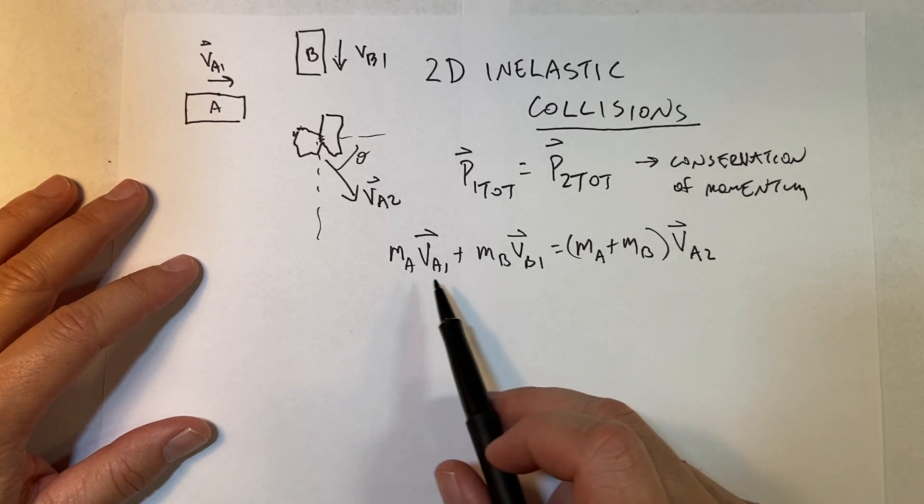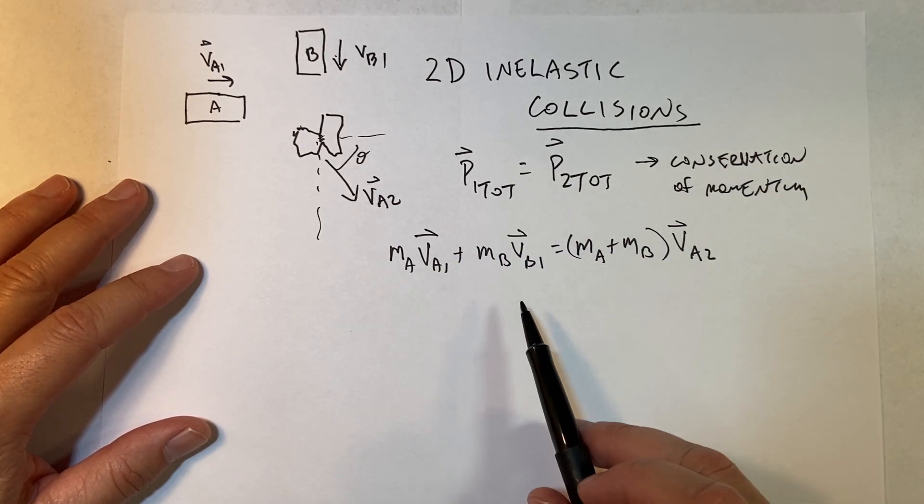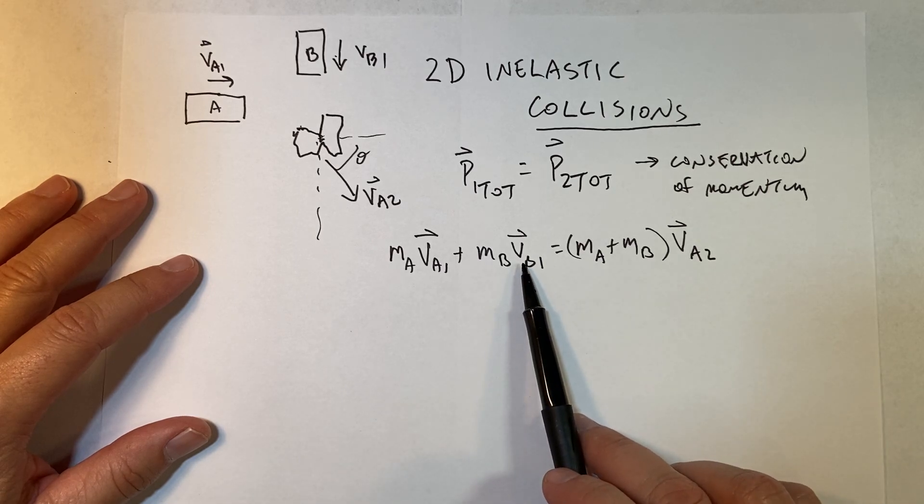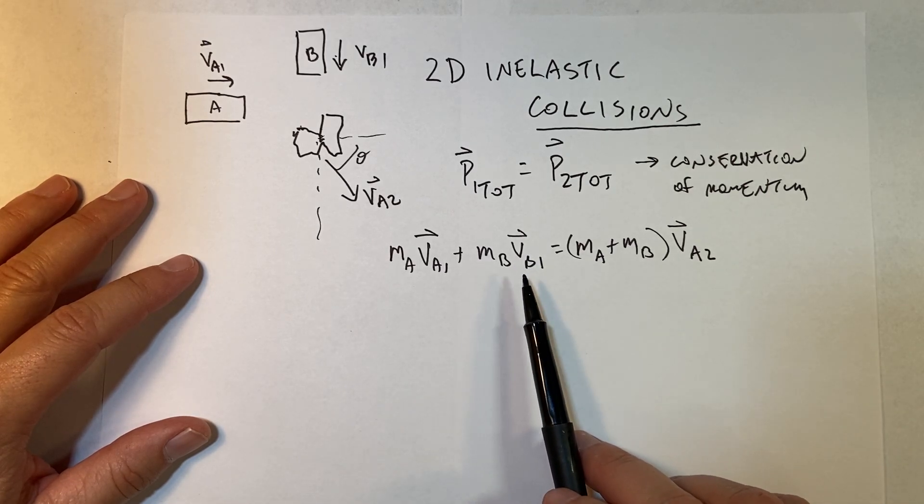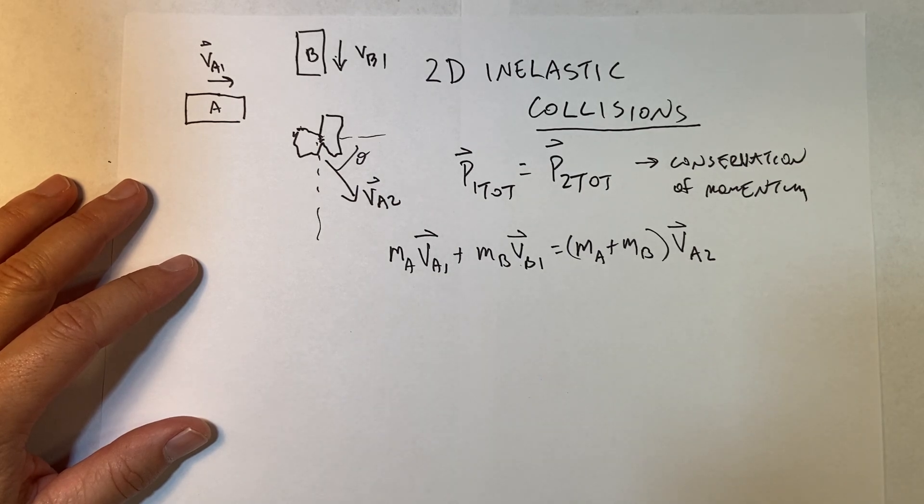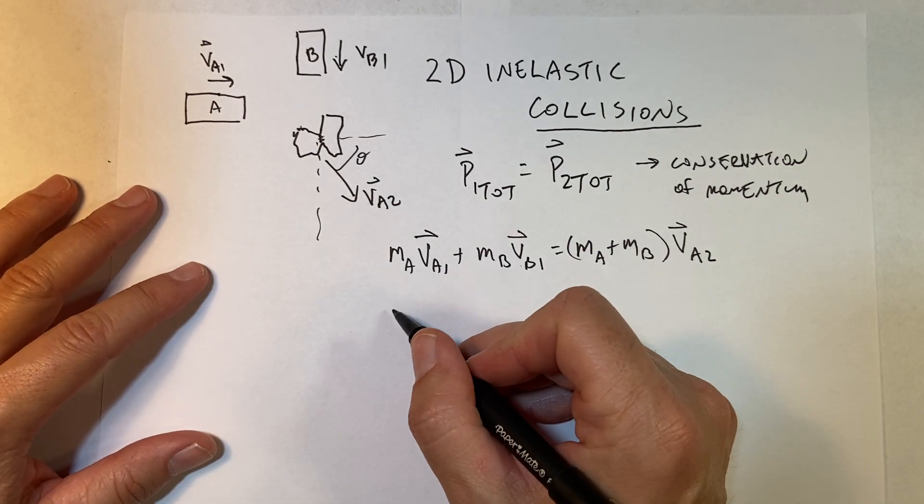And you may say, 'But wait, v_B is negative—it's going in the negative direction.' No, it has a negative y-component, but we don't put a negative here. That's a vector. You actually could write this out as—I could say...